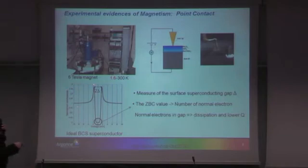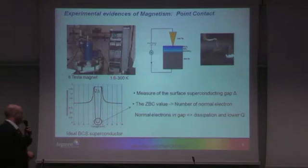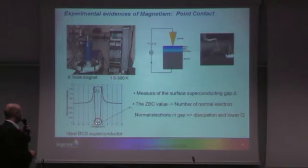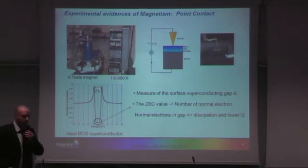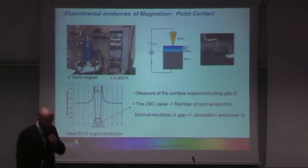This is what you should obtain for a perfect superconductor at two Kelvin: zero states at the Fermi level and two quasiparticle peaks around the Fermi level, separated by two delta.